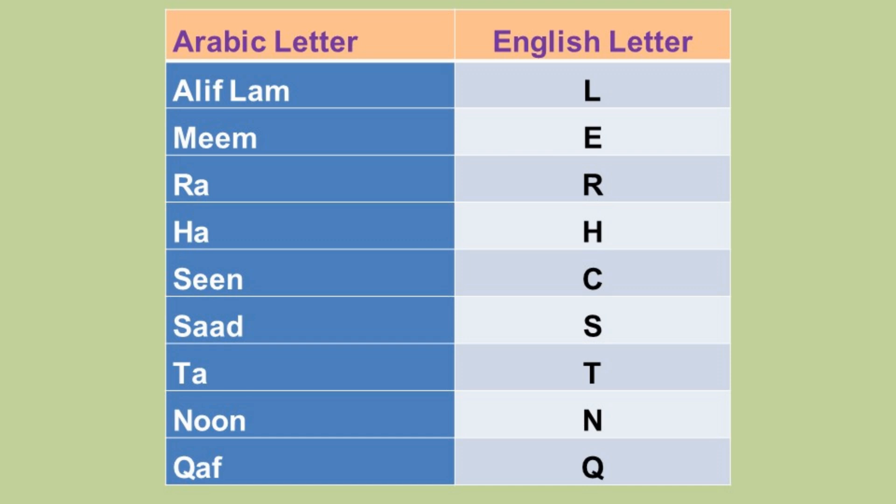Similarly, the Arabic letter Ra represents the English alphabet R; Ha represents H; Sin represents C; Sad represents S; Ta represents T; Nun represents N; and Khaf represents Q respectively.